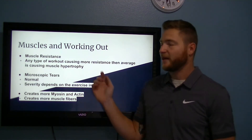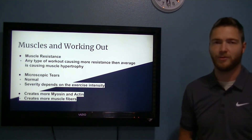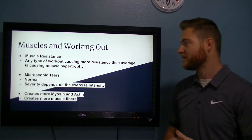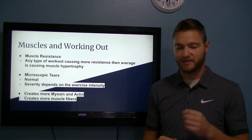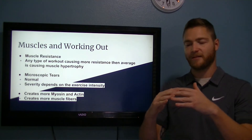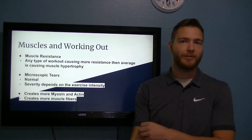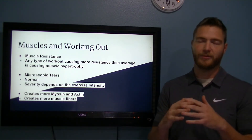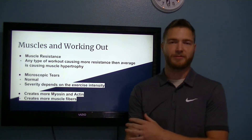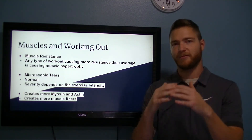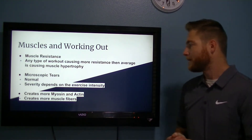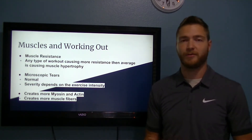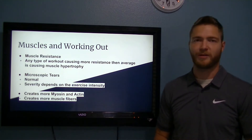As you're working out, any workout that's causing more resistance than you're used to in your average day is called muscle resistance. This causes myosin and actin to break down, creating little microfiber tears in your muscle, which is totally normal. What happens then is you're creating more myosin and actin, which is what makes your muscles look bigger — more myosin and actin building up on top of each other, creating more muscle layers. The harder you work out, the more tears you'll have; the lighter your workout, the fewer tears.